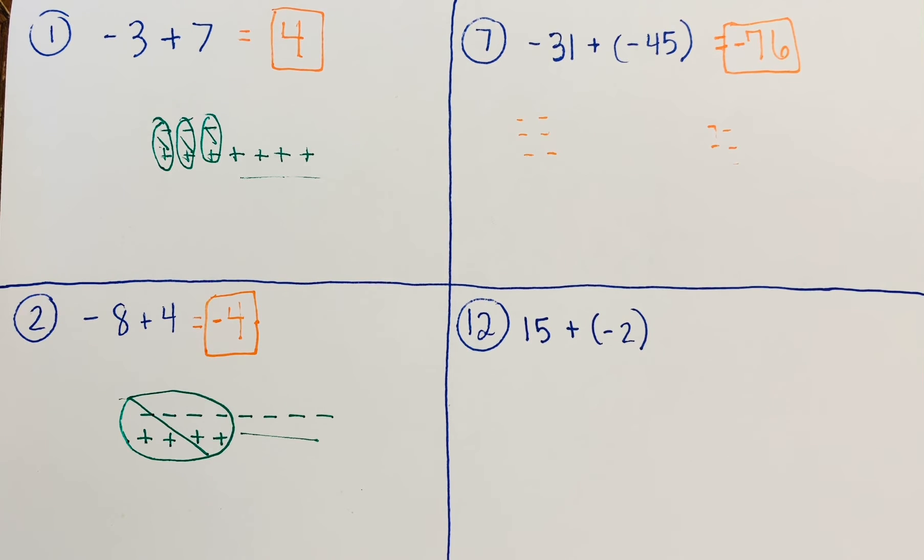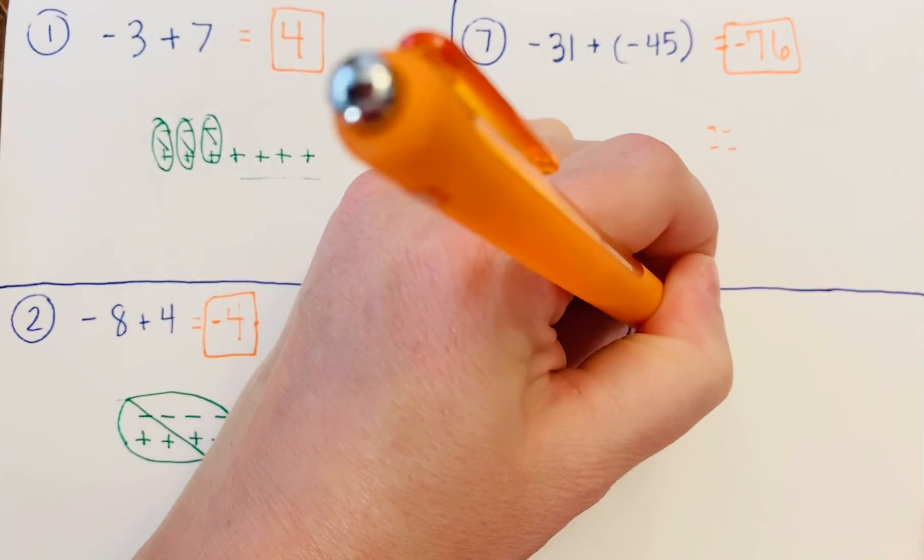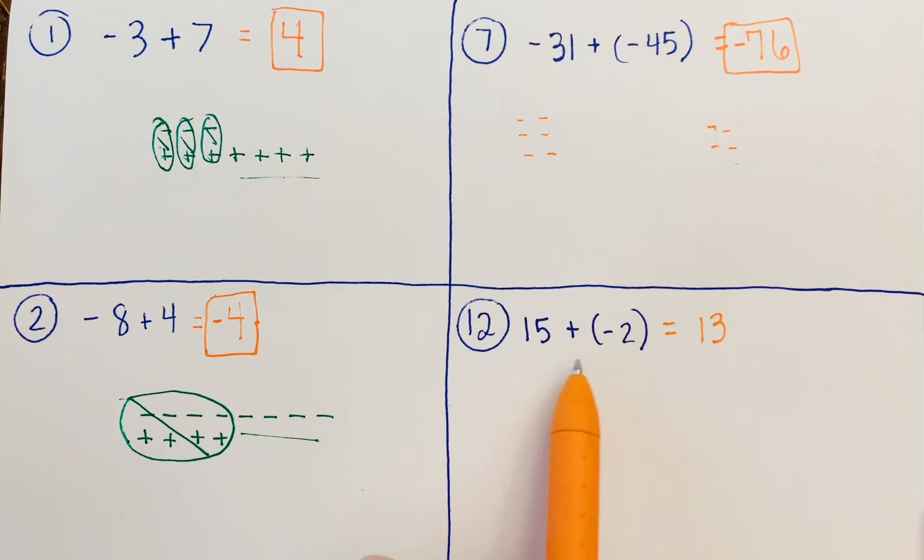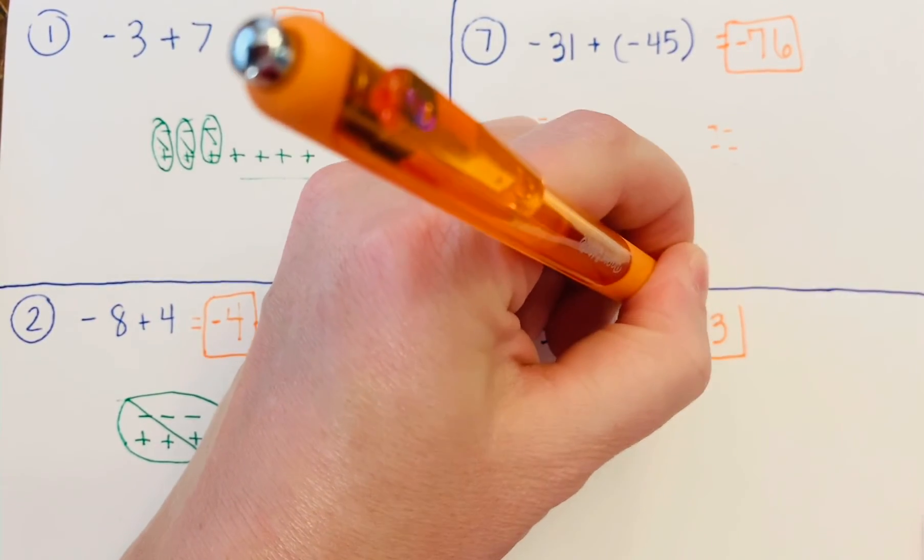Last but not least, we have 15 + (-2). We're back to having different signs—a positive and a negative. Different signs means find the difference: 15 - 2 = 13. We only have two negatives but 15 positives, so our answer is positive 13.